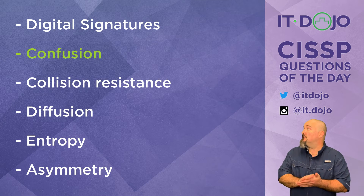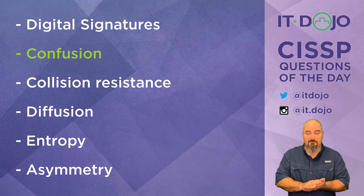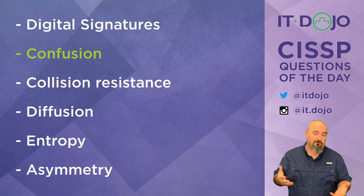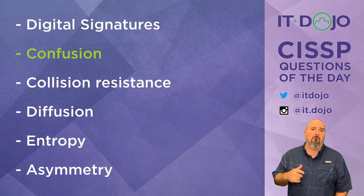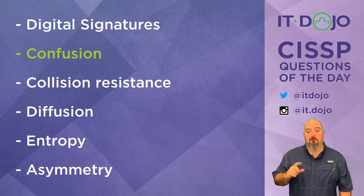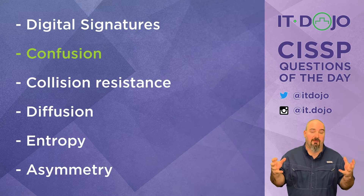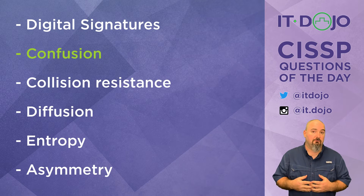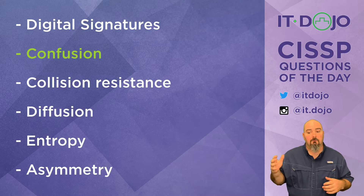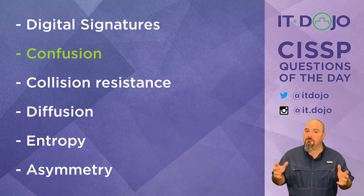The next choice on the list is collision resistance. We already know the right answer, so all these other answers are going to be incorrect, but let's make sure we know why. Collision resistance has to do with hashing. In the world of hashing, if you take two different values, hash them, and they both hash to the same value, we call that a collision. Generally, collisions are bad — we don't want collisions to occur.